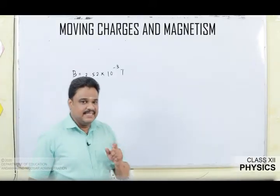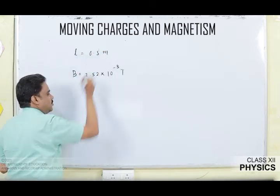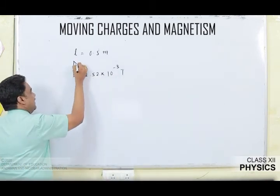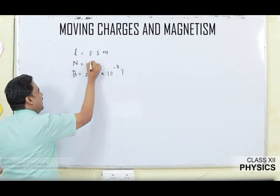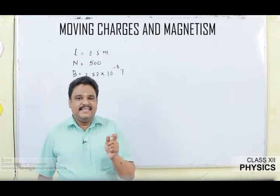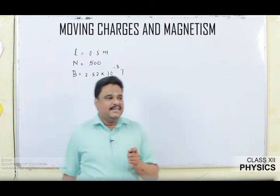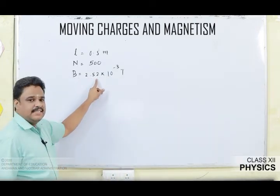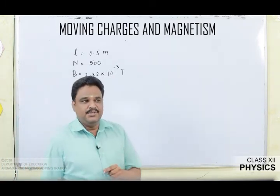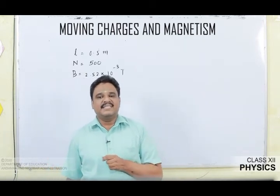The given values are: length of solenoid L = 0.5 m, number of turns N = 500, and flux density (which is another name for magnetic field) B = 2.52 × 10⁻³ Tesla. We are asked to find the current in the solenoid.